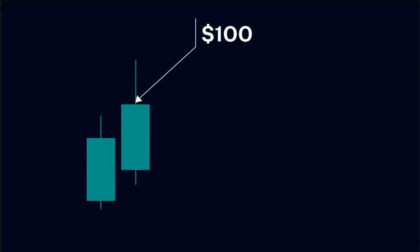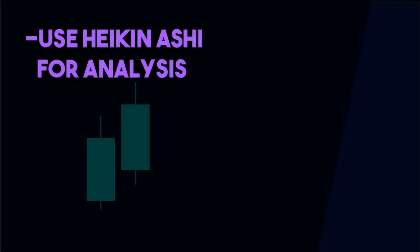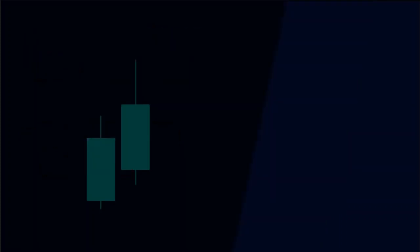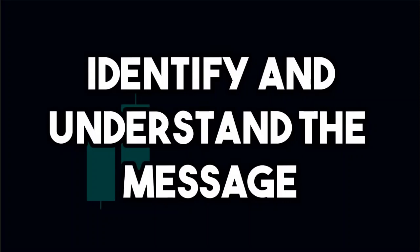An important point to note here is that if the close of the current Heiken Ashi candle is at $100, this does not mean that the price is currently trading at $100. The actual price could be $100.5 or $99.5. The actual price of the asset may vary a little from the Heiken Ashi candles. Hence, we should use Heiken Ashi for our analysis, and we should use candles to execute our trades. But even if you use Heiken Ashi to execute trades, you will not see a major difference in the price. Each Heiken Ashi candle conveys a certain message, and our job as traders is to identify and understand that message.